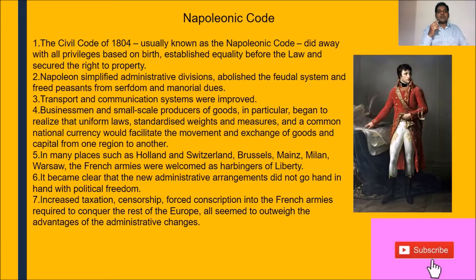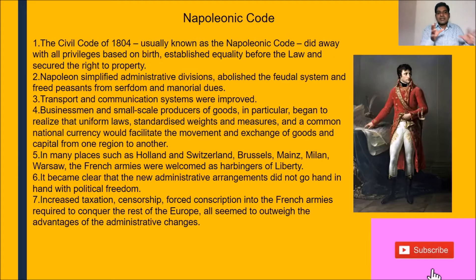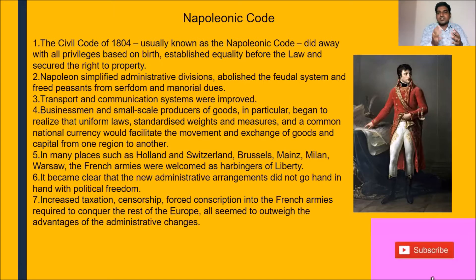When writing your answer, use the words 'Napoleonic Code' or 'Civil Code of 1804.' Key points: did away with privileges of birth, equality before law, right to property, simplified administrative divisions, abolished feudal system and freed the peasants from serfdom and manorial dues, developed transport and communications. What outweighed the advantages: increased taxation, censorship, and forced conscription into French armies. Please use the key words from your textbook to get full marks.